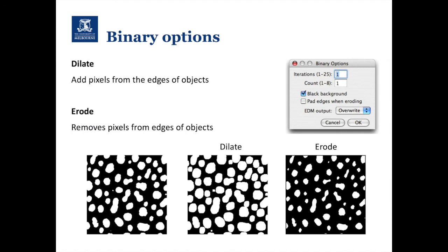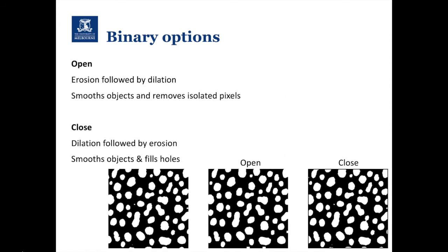Another tool we use quite a bit is binary options. Once we've created our binary objects, we can still modify them. There's an option to perform a dilate — adding pixels from the edge of objects — and erode, which removes pixels from the edges. Count is how many pixels we're adding and iterations is how many times we do that; we'll set ours to one and one. We can combine these: an open is an erosion followed by a dilation, or a close is a dilation followed by an erosion.